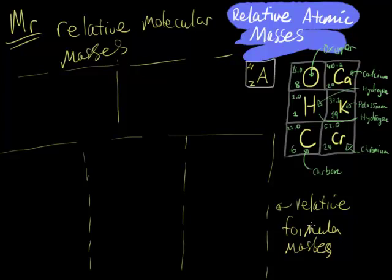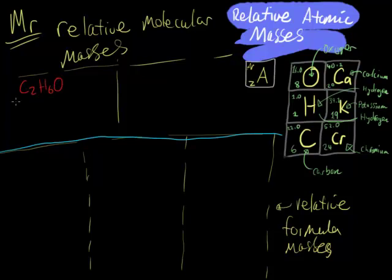The first thing we're going to look at for relative molecular masses is a molecule with the molecular formula C₂H₆O. This is quite a simple one to work out. I've got written the relative atomic masses of six elements which I'm going to be using in these examples. The number in the top left corner is the relative atomic mass, and that's what we're going to be using in these calculations.